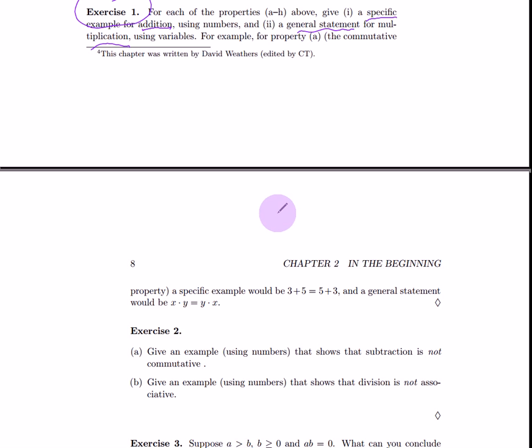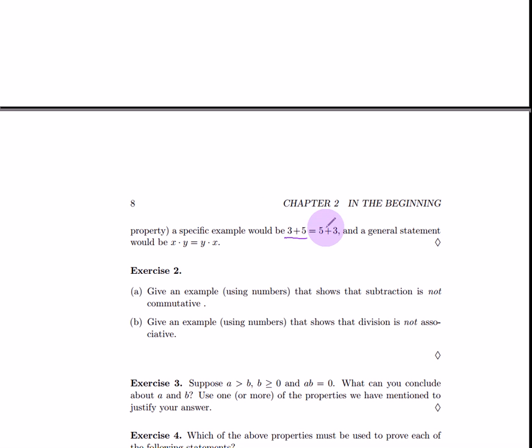Well, a specific example is 3 plus 5 equals 5 plus 3. You've changed the order. You haven't changed the result. A general statement for multiplication is x times y equals y times x. You can multiply two numbers. The x and y represent general numbers and you can multiply them in any order without changing the value.